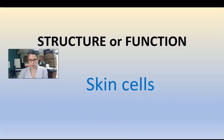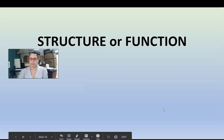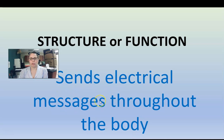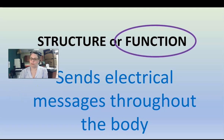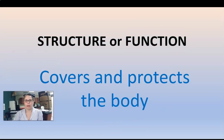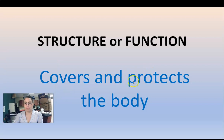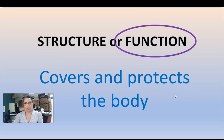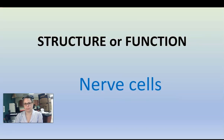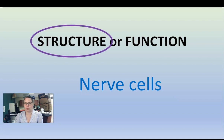Skin cells — structure or function? Structure. 'Sends electrical messages throughout the body' — sending, sends — that's an action word, that is a function. Those are the functions of nerve cells, your brain cells. 'Covers and protects' — those are action words, that's function. Those are the functions of your skin cells. Nerve cells — structure. Those are things; it's a part of our body.